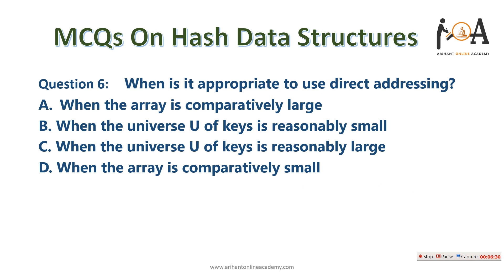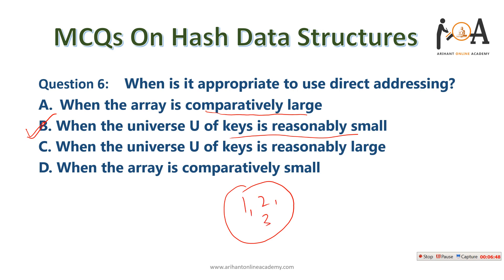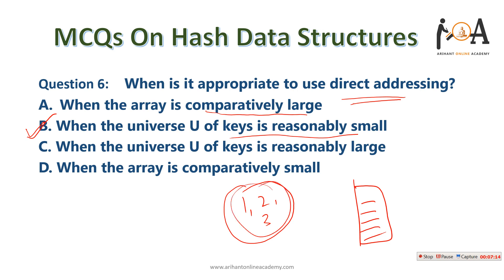When is it appropriate to use direct addressing? Option B is correct: when the universe U of keys is reasonably small. If only a small set of values exists and our hash table has more memory spaces than the universe size, we use direct addressing — key 1 goes to index 1, key 2 to index 2, and so on. It saves time and search space.